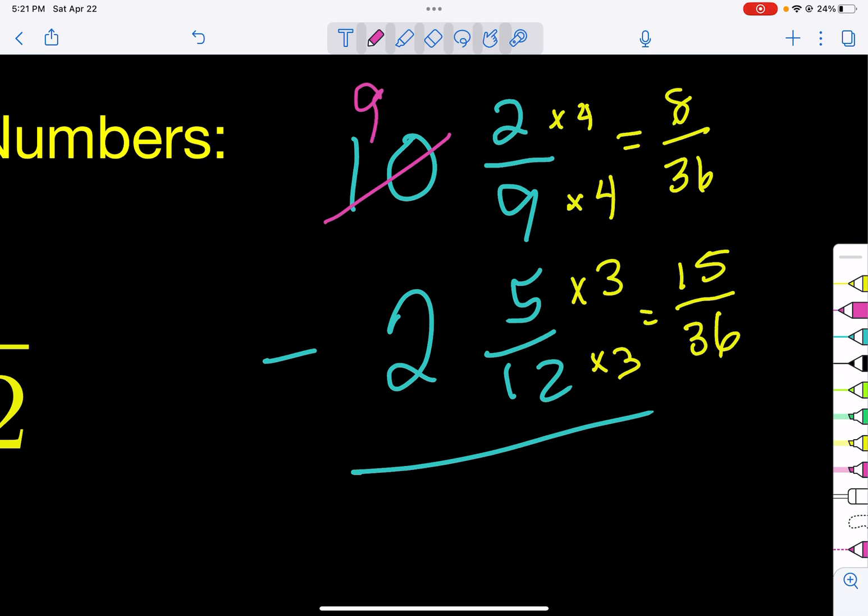the one that we borrowed is going to be cut into 36ths. So all you do—whatever this denominator is after getting common denominators—we're going to add that number. Okay, so 36 plus 8 is 44. Okay, so now